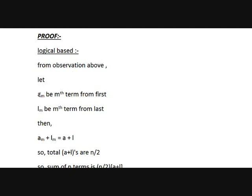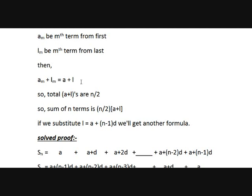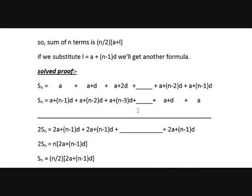From the observation above, let a_m be the mth term from the first and l_m be the mth term from the last. From the observation above, a_m plus l_m equals a plus l — the mth term from first and mth term from last sum equals the sum of first and last term. Then how many such a plus l pairs will we have in total? First and last term is one pair, second from first and second from last is another, third from first and third from last is another. If we took 6 terms, we have 3 pairs. So the total number of a plus l pairs is n by 2, meaning sum of n terms is n by 2 into a plus l. If you substitute l as a plus n minus 1 times d, you get the other formula.